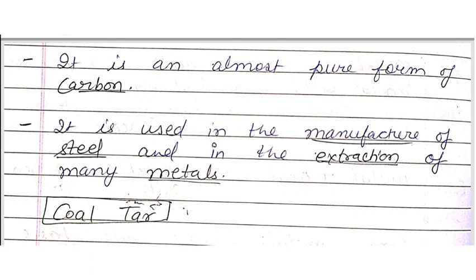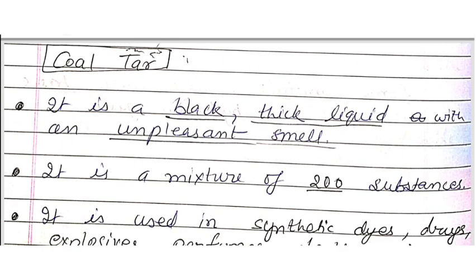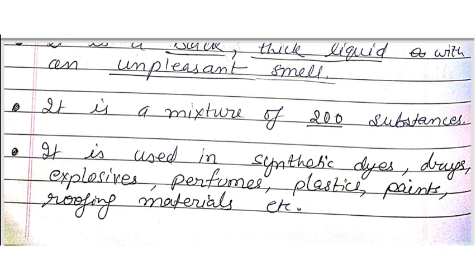Coke is used in the manufacture of steel and in the extraction of many metals. Next, coal tar — it is a black, thick liquid with an unpleasant smell. It is a mixture of about 200 substances. It is used in synthetic dyes, drugs, explosives, perfumes, plastic, paints, and roofing materials.